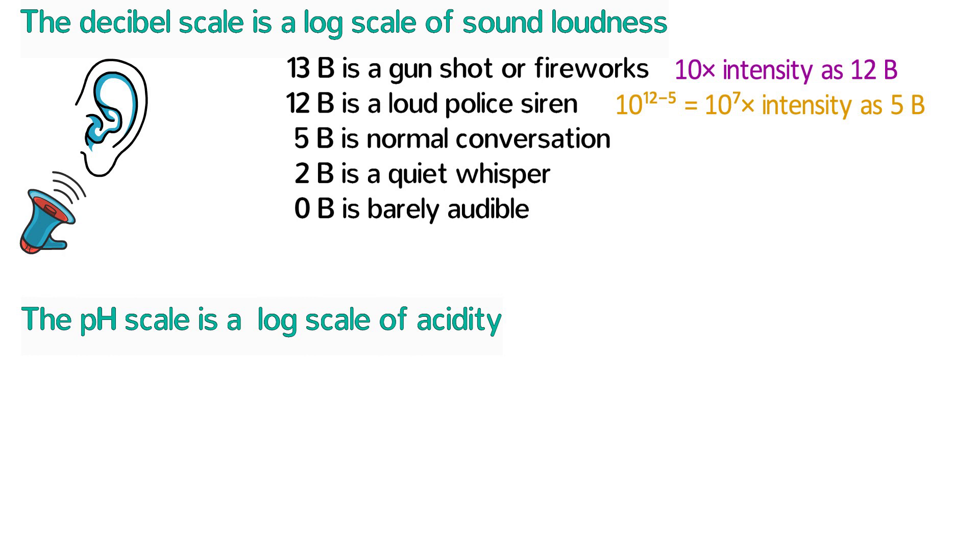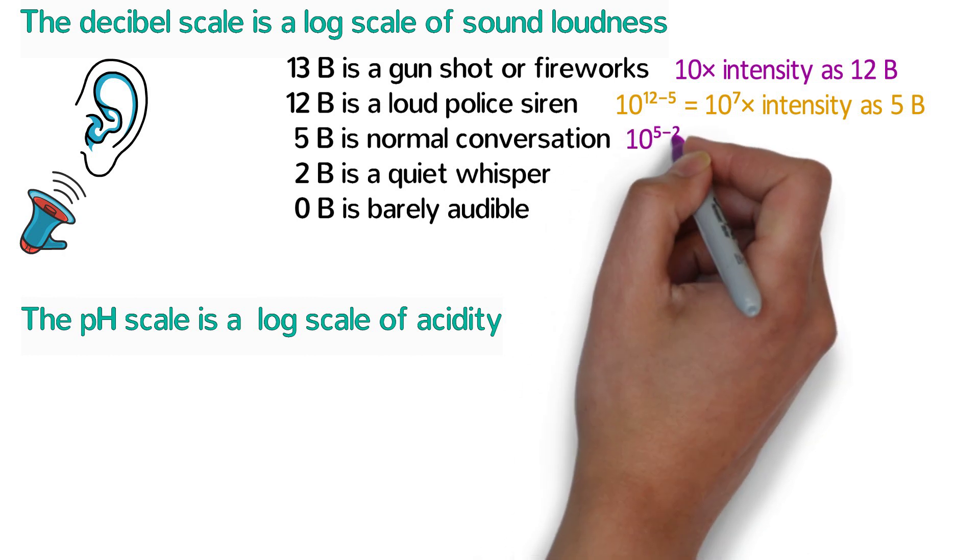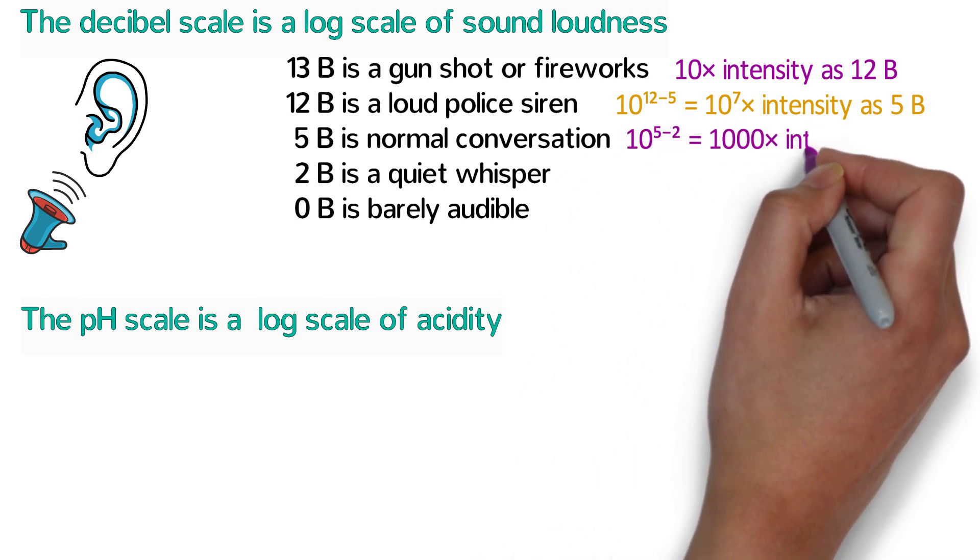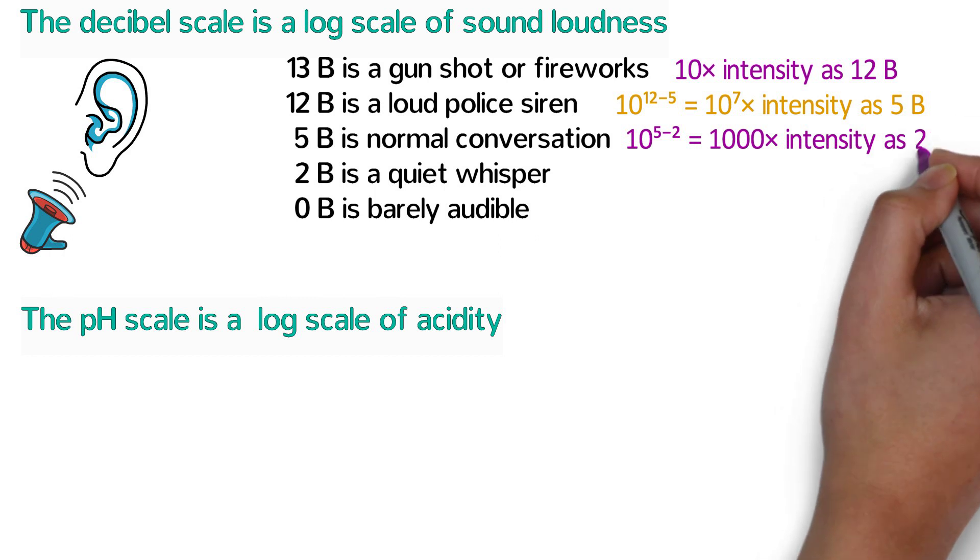Now please pause the video and consider how many times the sound intensity of five bells is compared to two bells. To figure this out, subtract two from five and the answer should be ten to that power. So five bells is ten to the five minus two or one thousand times the sound intensity of two bells.